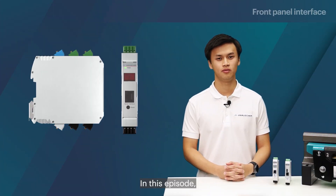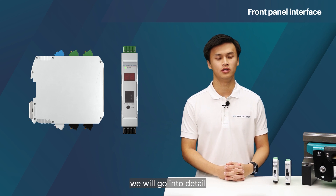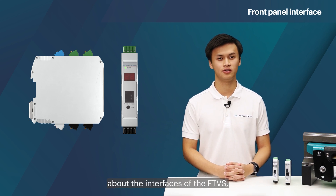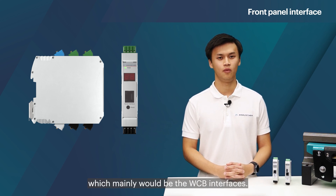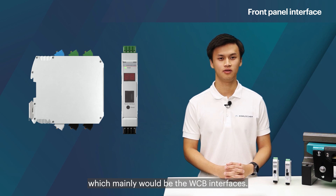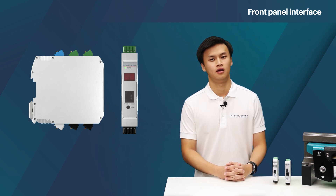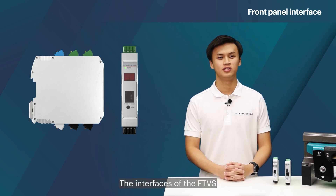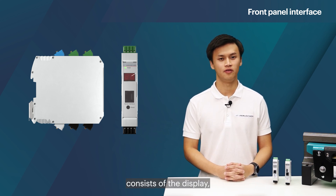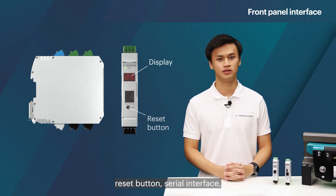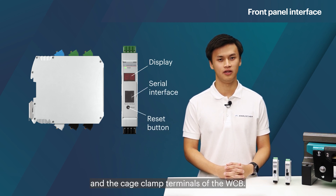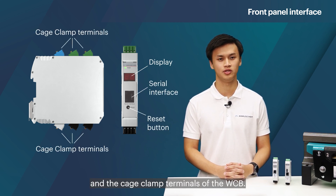In this episode we will go into detail about the interfaces of the FTVS, which mainly will be the WCB interfaces. The interfaces of the FTVS consist of the display, reset button, serial interface, and the cage clamp terminals of the WCB.